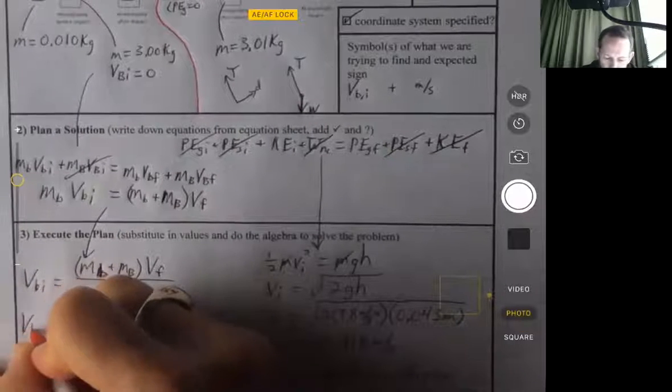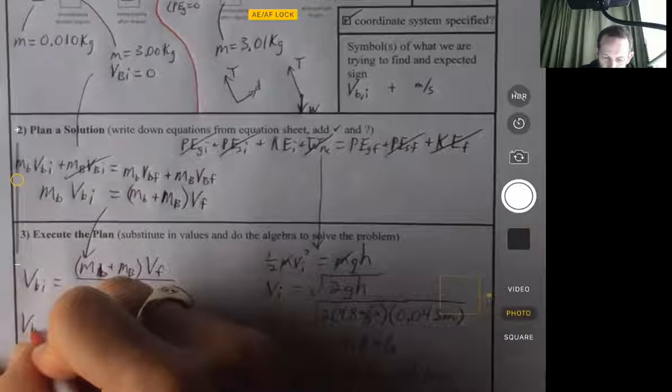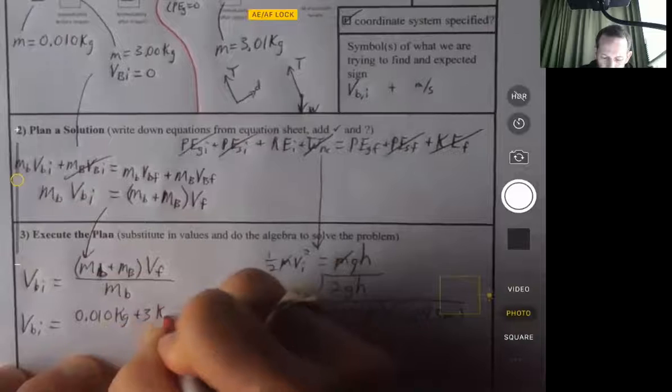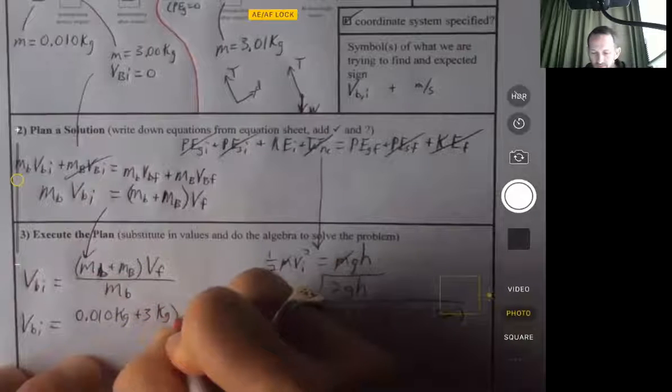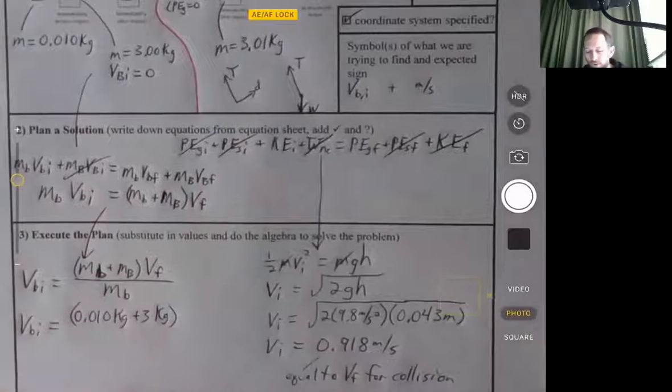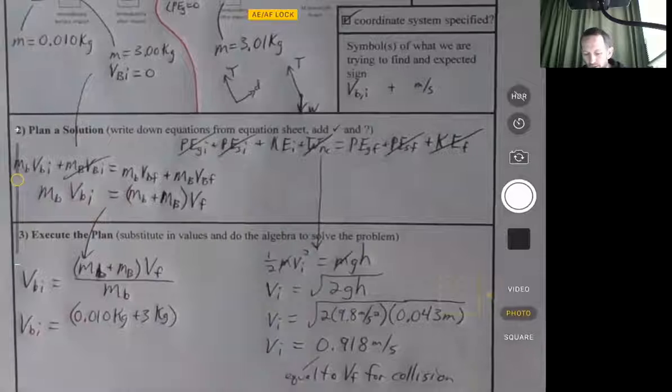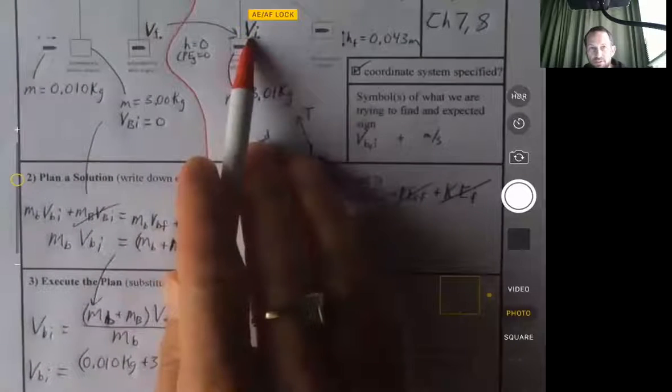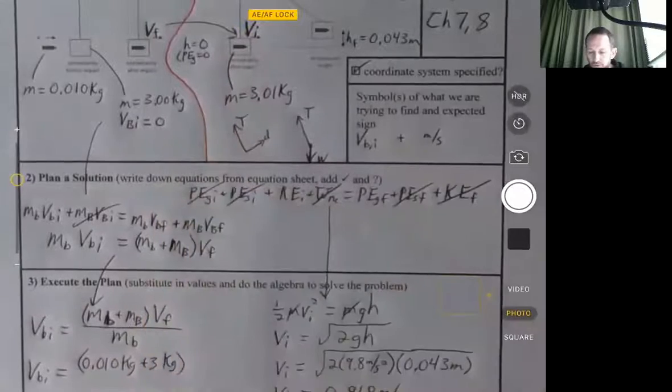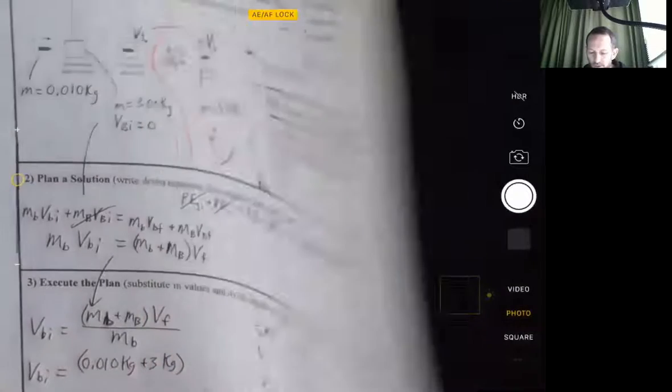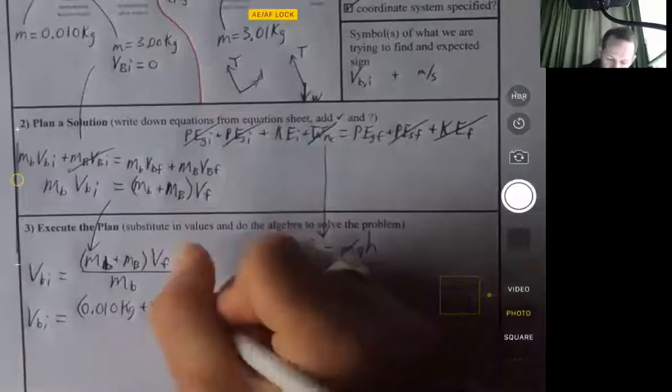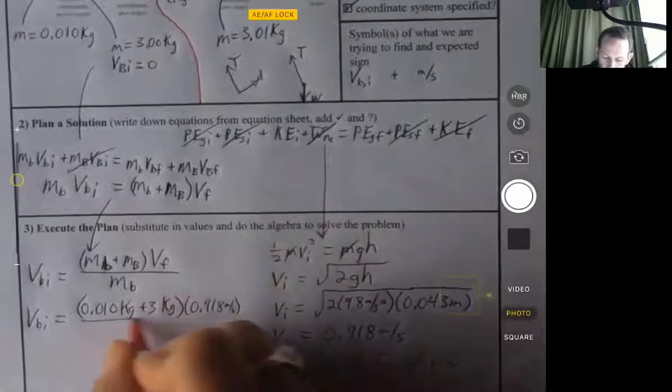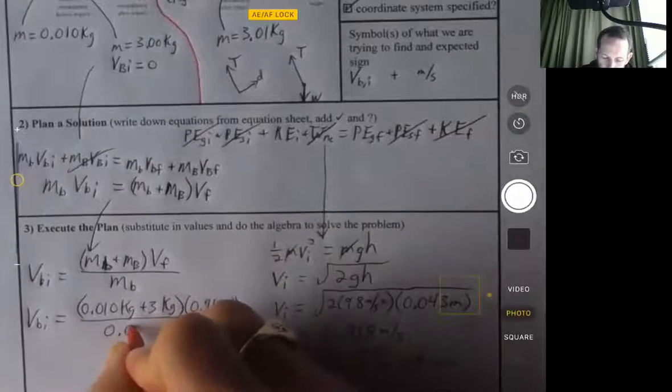And so now I substitute these in: 0.010 kilograms plus three kilograms times V-final. Now remember the V-final from the collision is the same as the V-initial for the pendulum swinging. So we're going to use this value of 0.918.